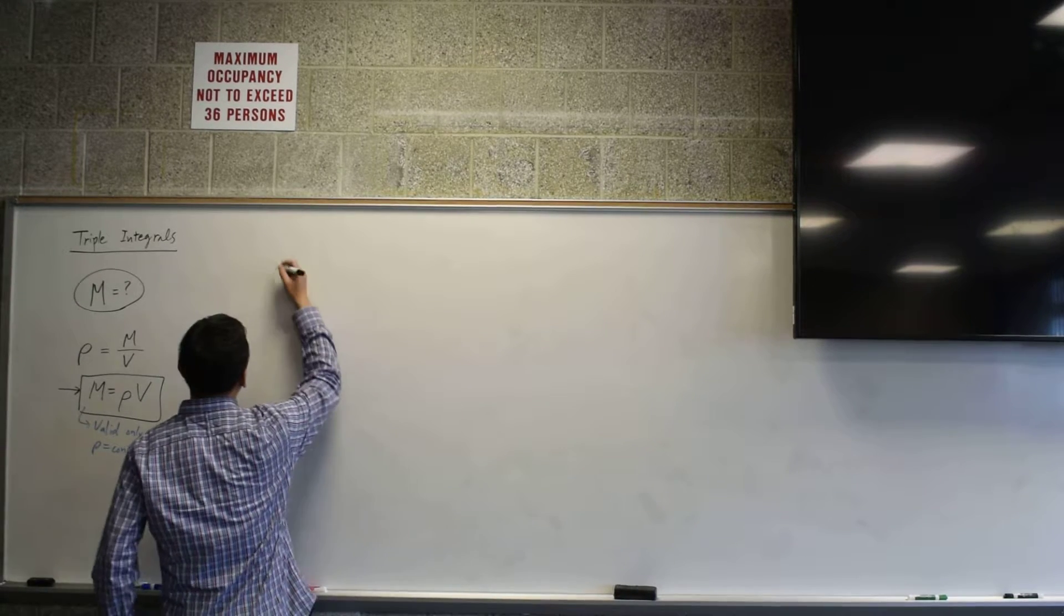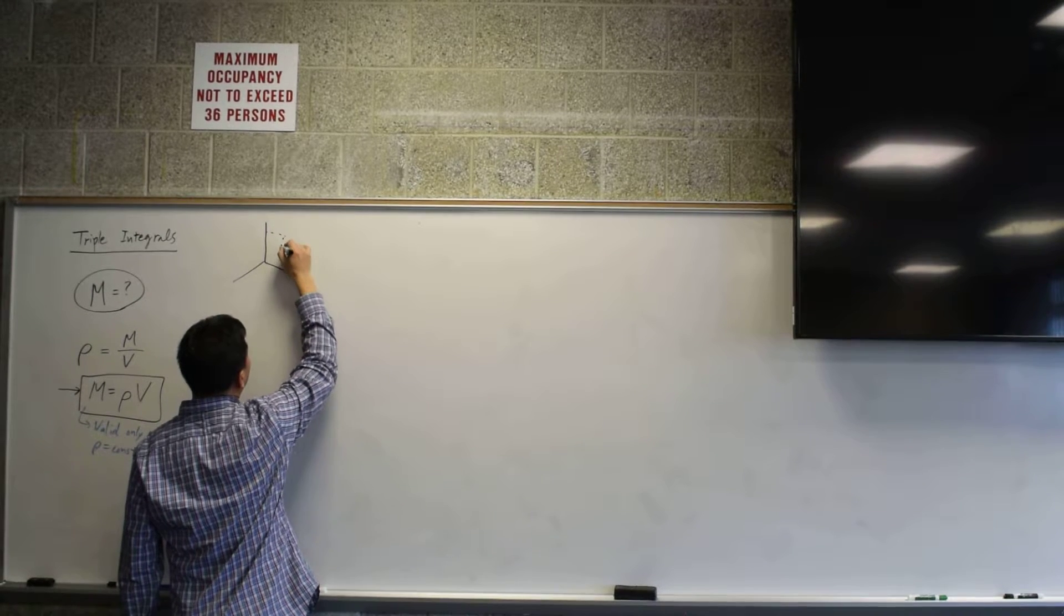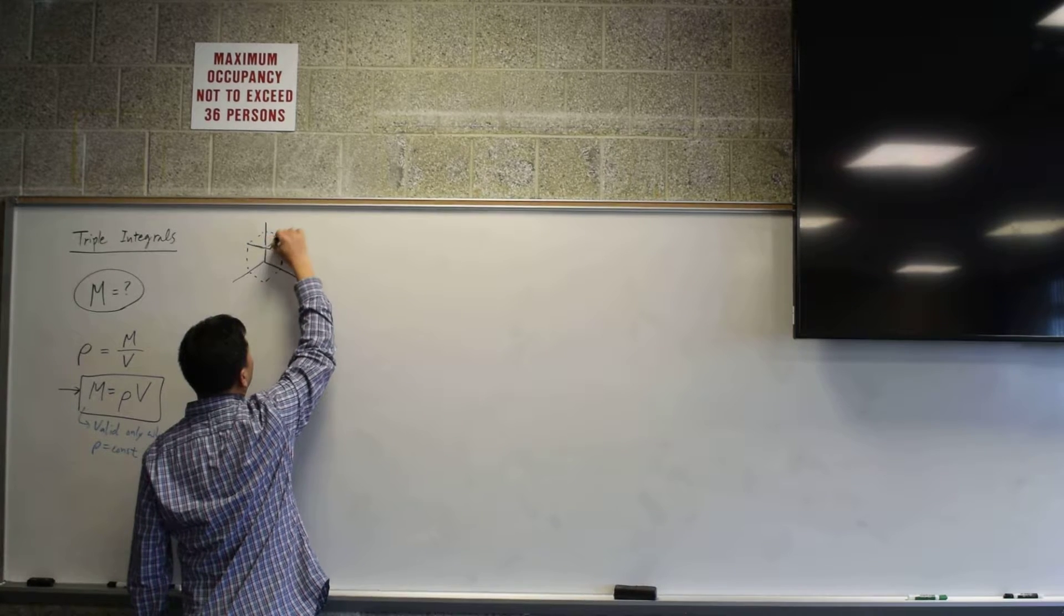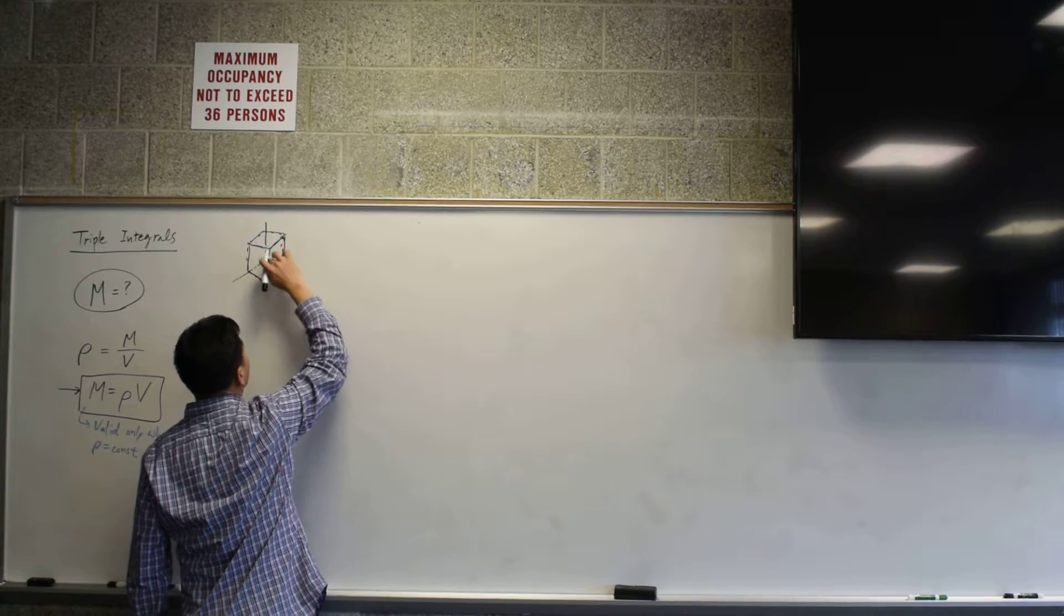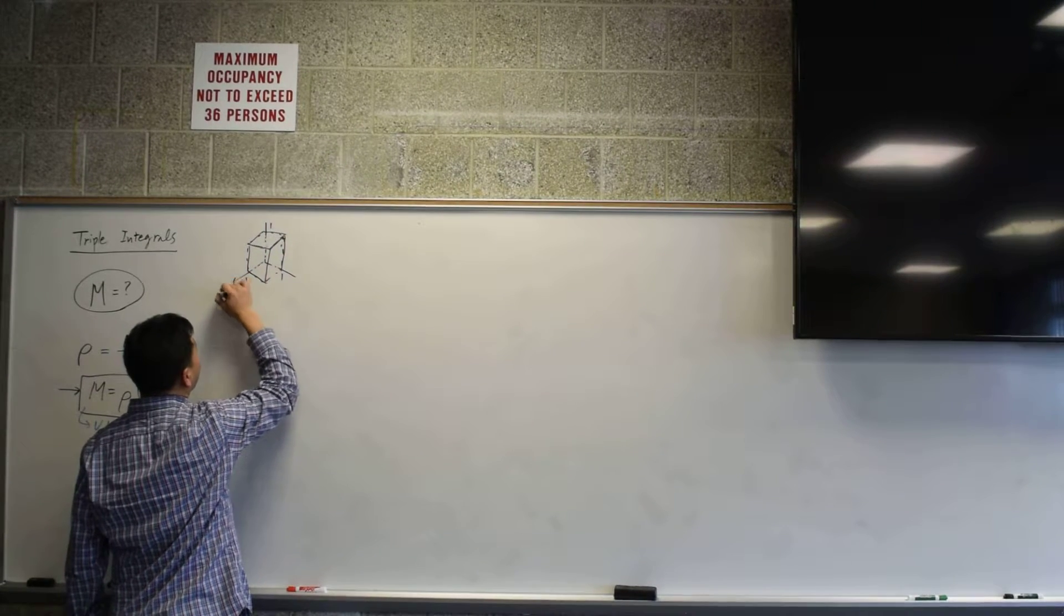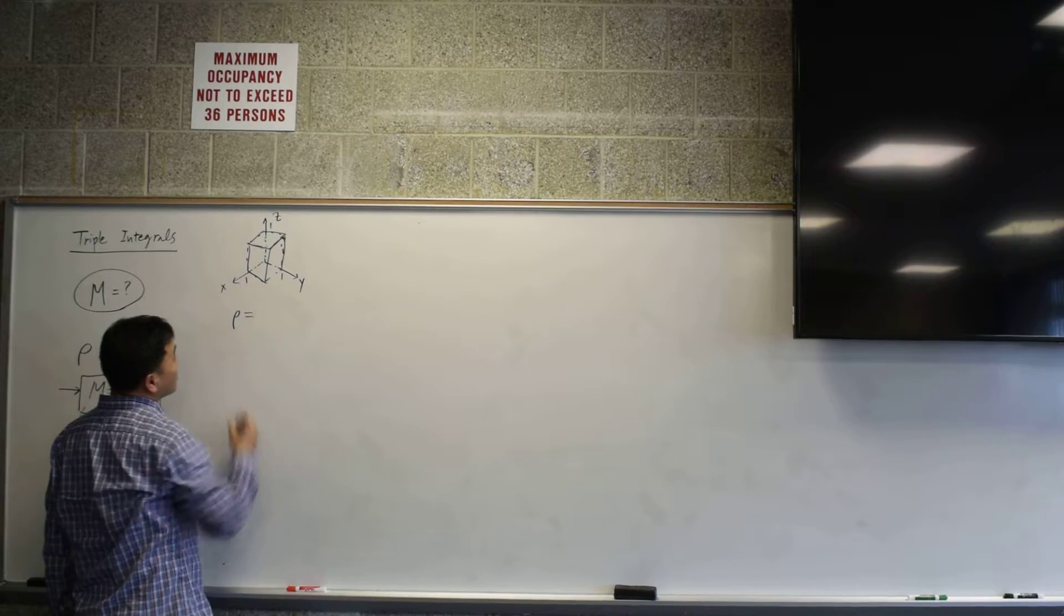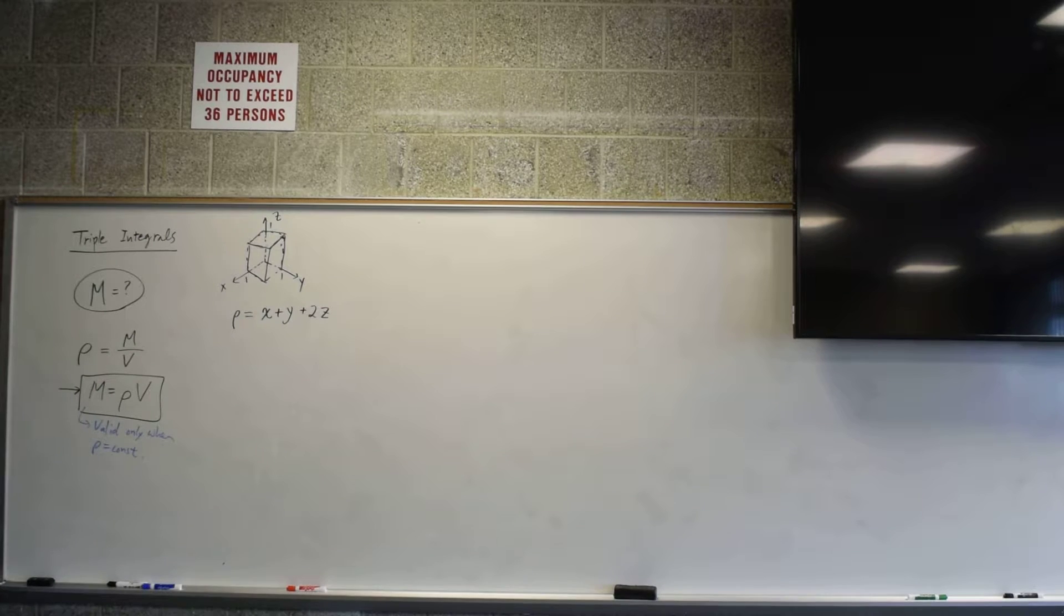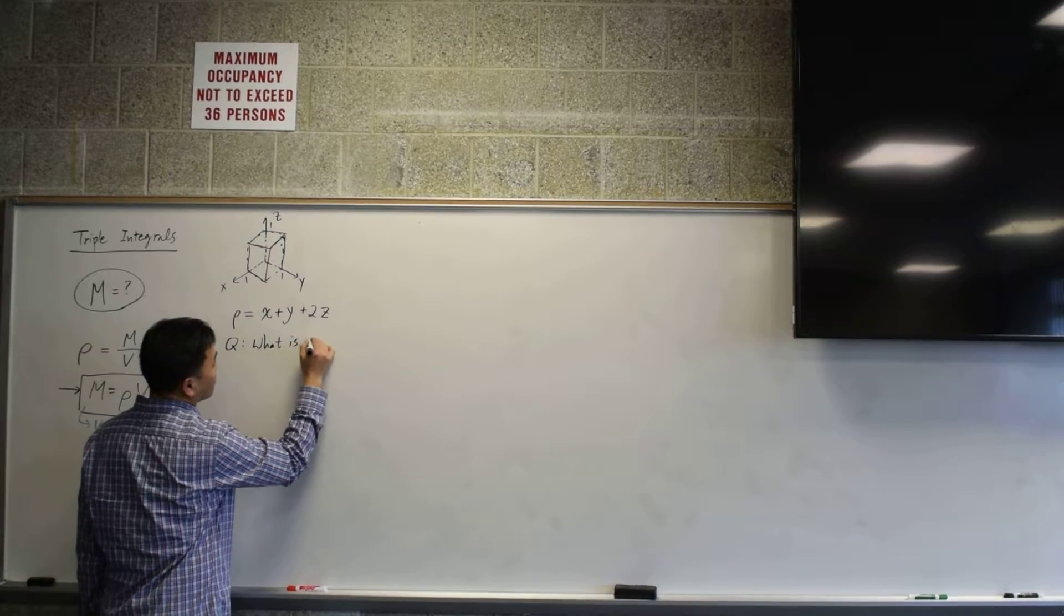So think about the following example. Suppose you have a cube. Let's say you have a cube of length one. So this is x, y, and z. Now let's think about the density as given as x plus y plus 2z. Suppose your density is given as rho equals x plus y plus 2z. The question is, what is the mass?